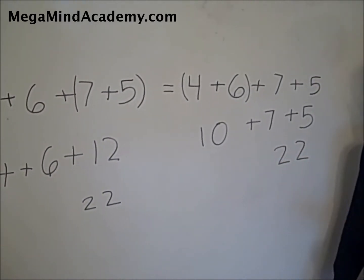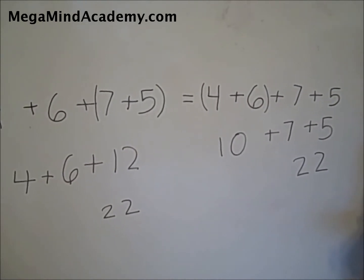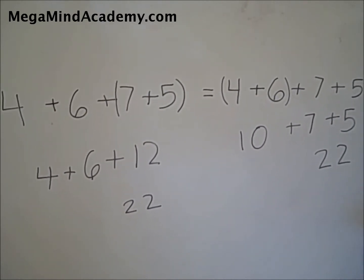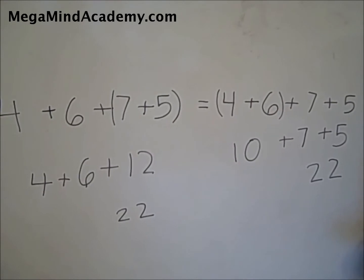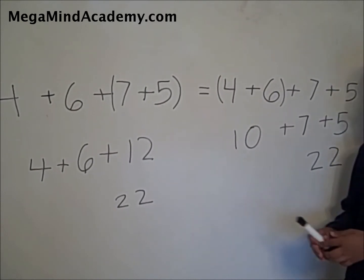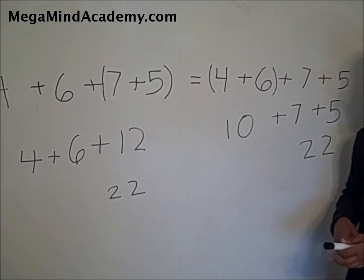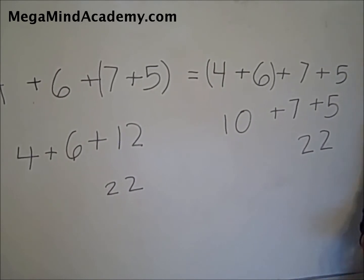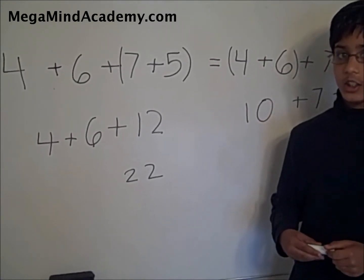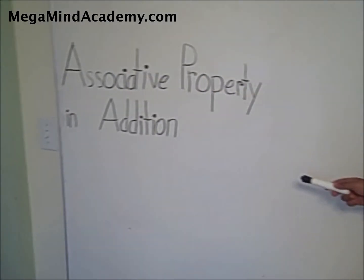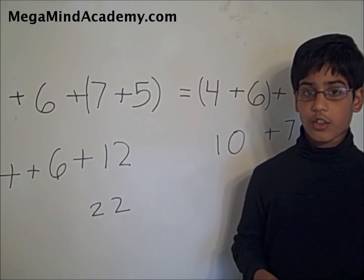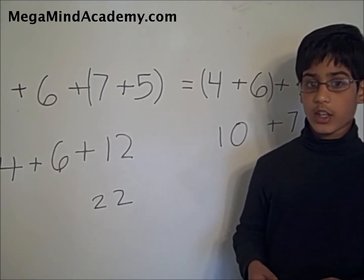This is another example of the associative property in addition because both sums remain the same regardless of their grouping. Today we learned about the associative property in addition. The associative property in addition means that when there are three or more numbers in an equation, the sum remains the same regardless of their grouping.